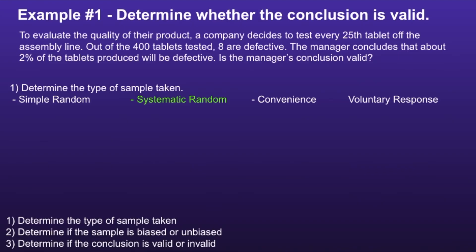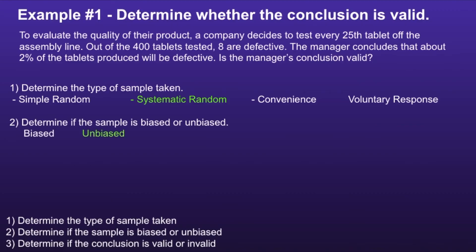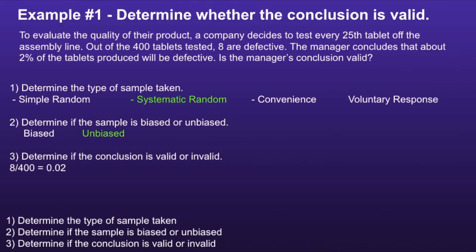Step two: determine if the sample is biased or unbiased. Since it is a systematic random sample, this would be an unbiased sample type. Step three: determine if the conclusion is valid or invalid. The manager concludes about two percent of tablets will be defective. Out of four hundred tablets tested, eight are defective. Taking eight divided by four hundred equals 0.02, and multiplying by one hundred gives two percent. So it is in fact two percent, and since this is an unbiased sample, the manager's conclusion is valid.